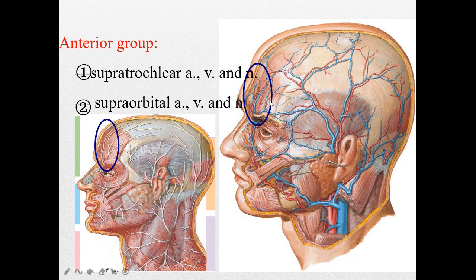In the anterior group, we will look for these vessels and nerves. They are the supraorbital artery, vein, and nerve, and the supratrochlear nerve, artery, and vein. These are two groups — medially is supratrochlear, and laterally is supraorbital.